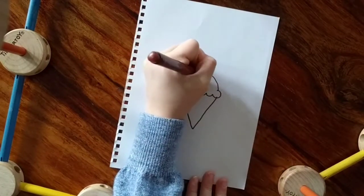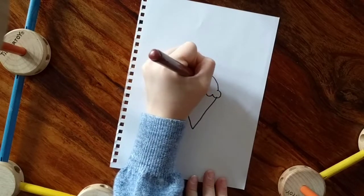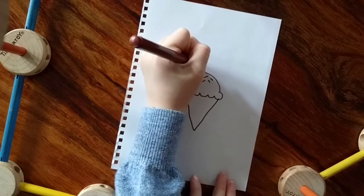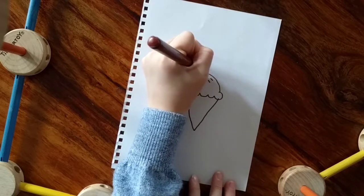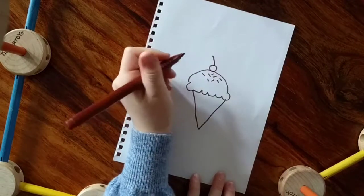And you're going to do some sprinkles on the top. Nice and simple, just straight lines. Then you're going to draw a cherry. So it's going to be a circle and then a line on the top.